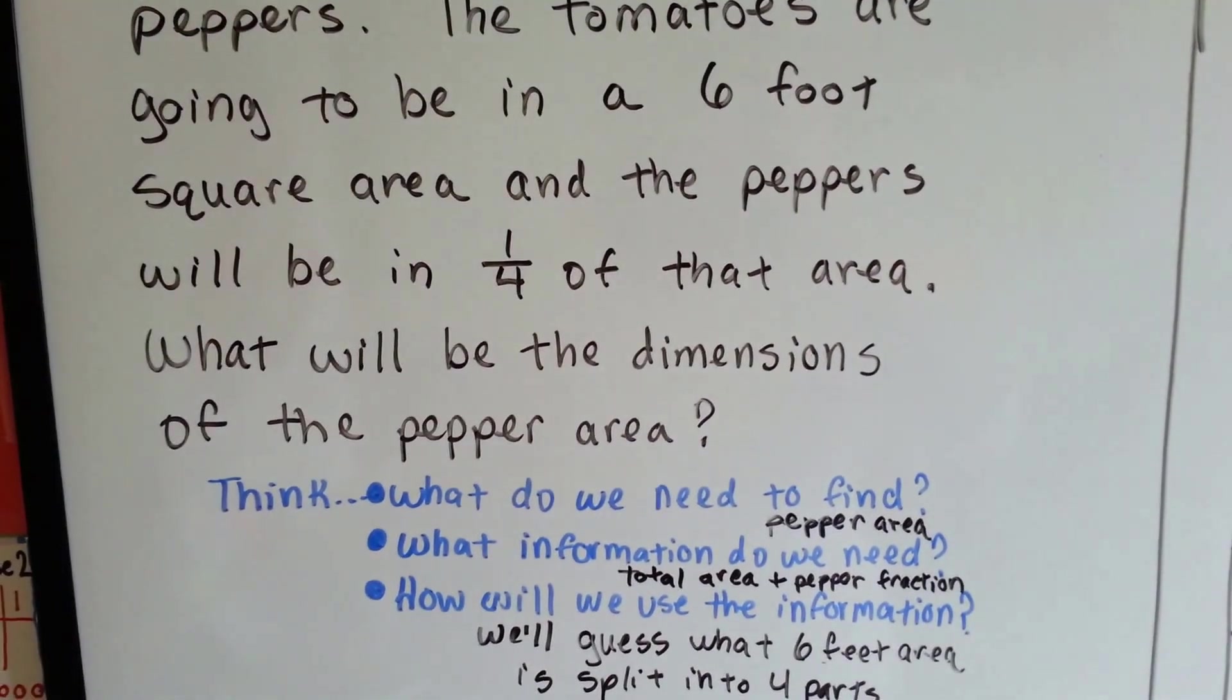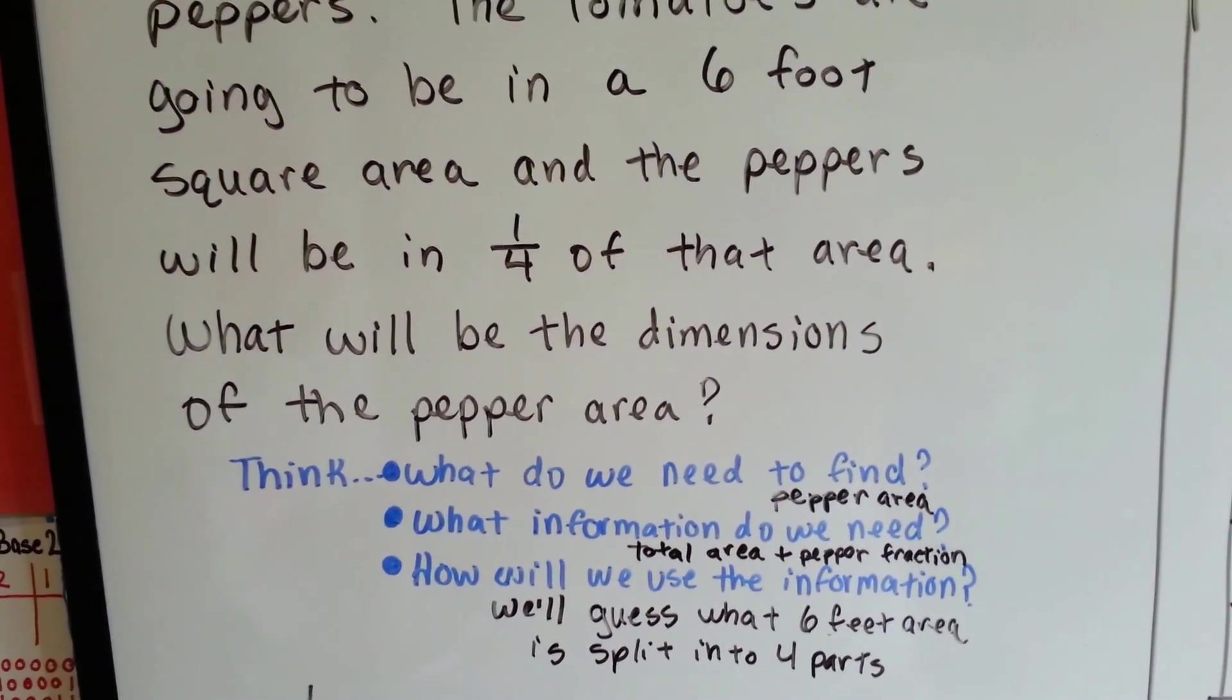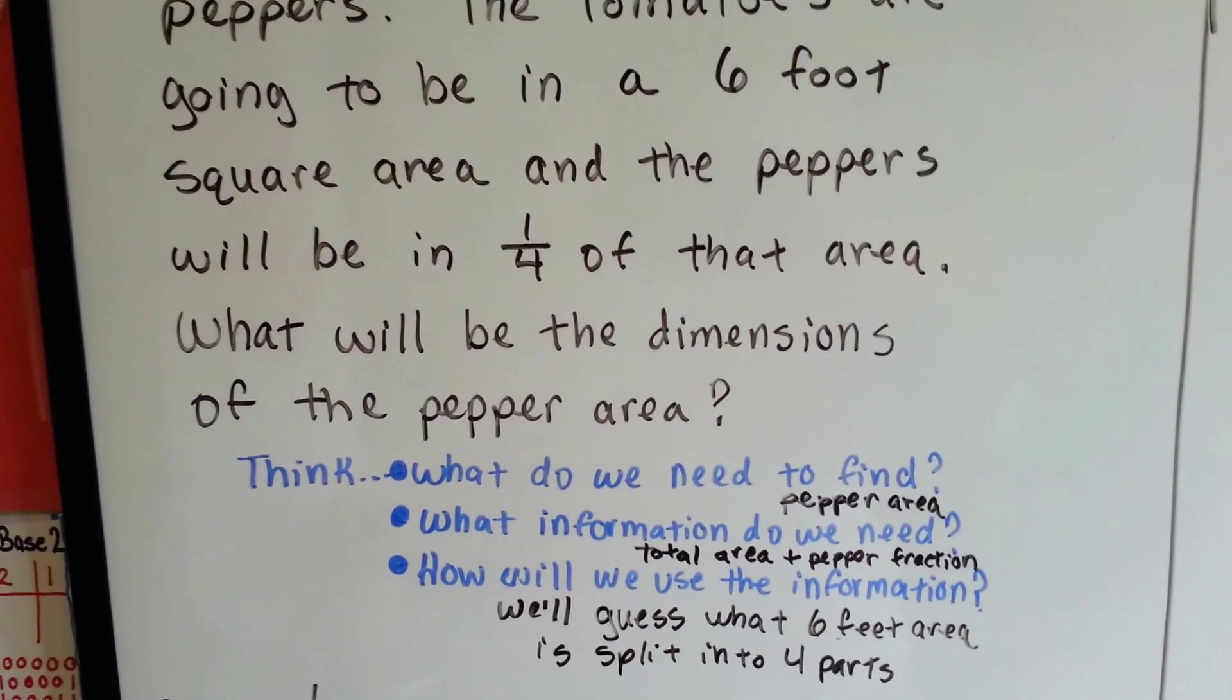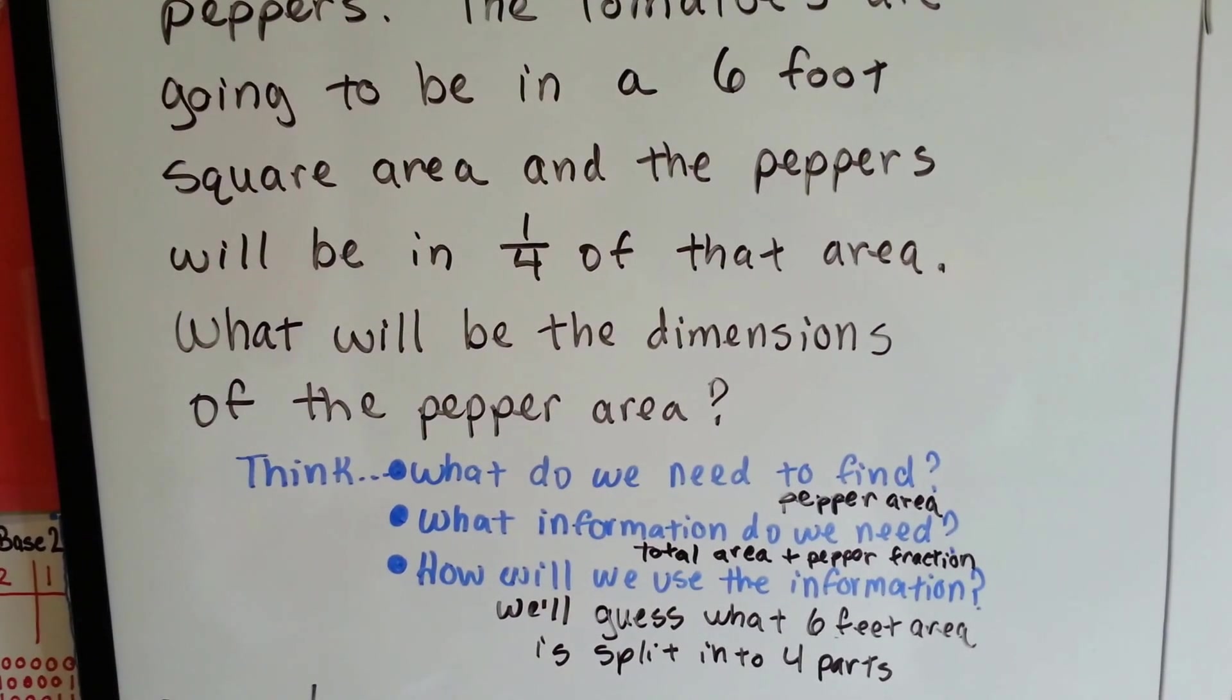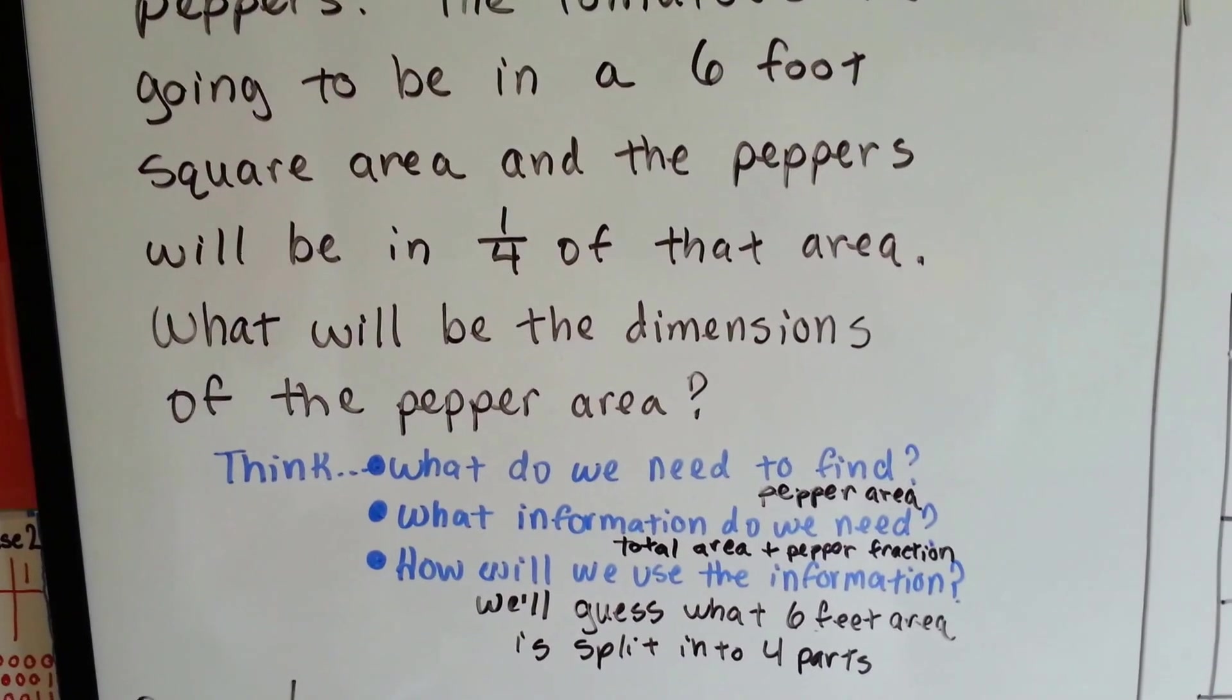So we have to think, what do we need to find? The pepper area. What information do we need? The total area and the fraction that the pepper area is going to be in. And then how will we use the information? We'll guess what a six-foot area is split into four parts.